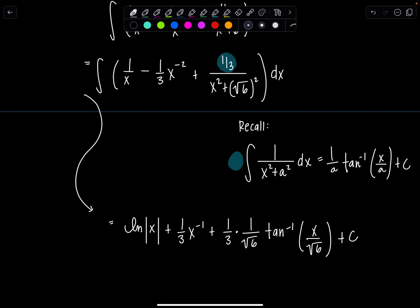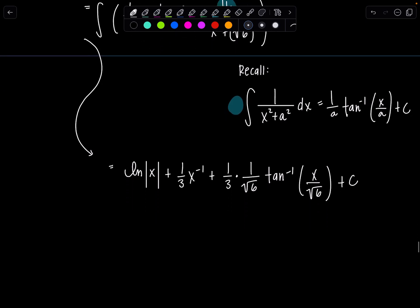And that's pretty much it. I would clean it up ever so barely. ln, absolute value of x, plus, wouldn't this look better if we just wrote it as 1 over 3x? Yes, it would, Professor V, plus 1 over 3 rad 6, tan inverse x over rad 6, plus c, voila.